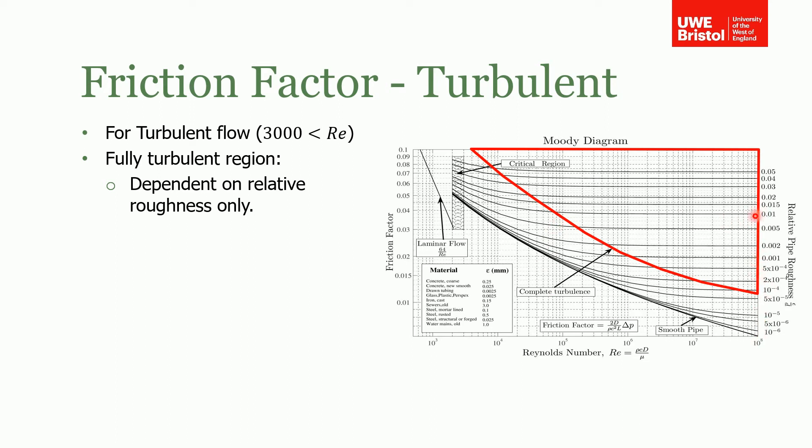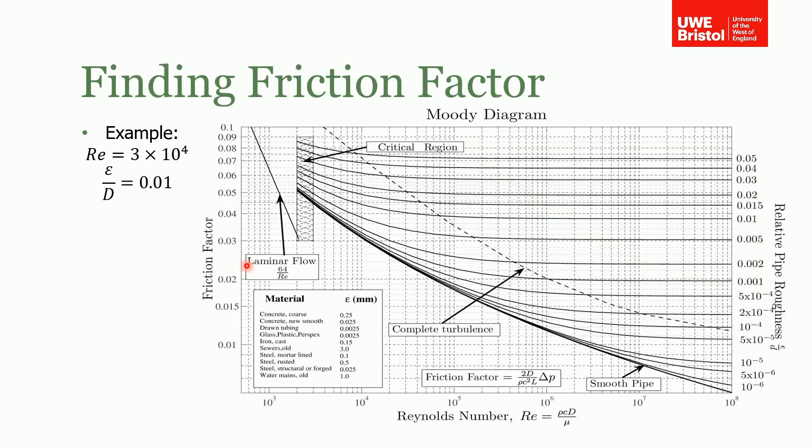If we look at this relative pipe roughness here of 0.01, you can see that between around Reynolds number of ten to the five and ten to the eight you have a constant friction factor, regardless of where it is. So it's relatively independent. It's dependent only on relative roughness, and as you'll see later we can take advantage of this fact when we're trying to solve some of the different problems.